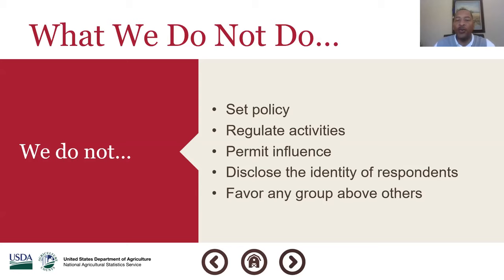We don't disclose the identity of any of our respondents or their information. Information provided to NASS by farmers and ranchers is protected by law — Title VII of the U.S. Code, and also the recently signed Evidence-Based Policy Act. Before that, the legislation was called CIPSEA — the Confidential Information Protection and Statistical Efficiency Act — to protect the confidentiality of information provided by farmers and ranchers. There are significant fines: five years in prison and up to $100,000 in fines if you intentionally disclose individual producer information.